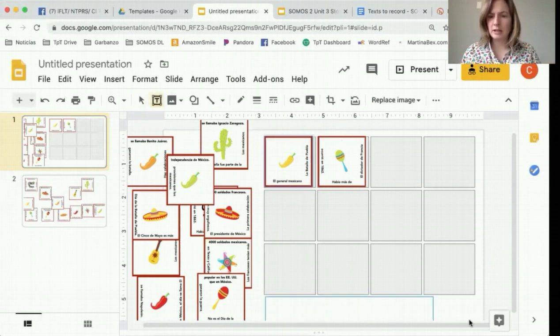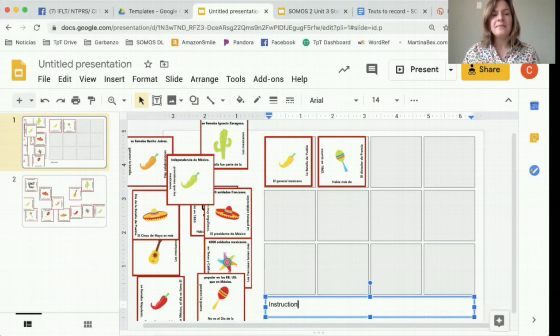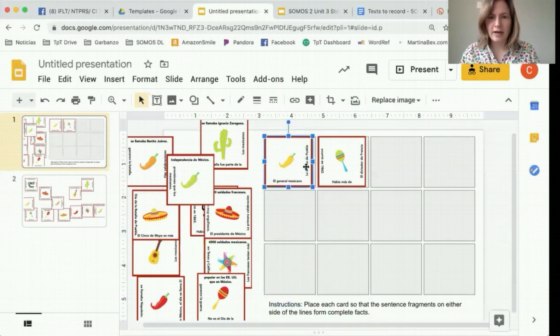Okay, so I placed the first two cards. You don't have to do that, but I find that that makes it easier for students. And then down here I'm going to make a little instructions box. If students have done this kind of an activity before in class, the instructions are going to be a lot easier for you to write. If they've never done this kind of an activity before, then you will probably need to write pretty detailed instructions. You might even add an instruction slide. Instructions: I'm going to say place each card so that the sentence fragments on either side of the lines form complete facts. Okay, not the best instructions but you could write a lot more. I'm just doing this quickly.